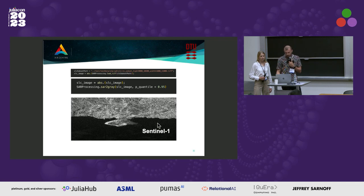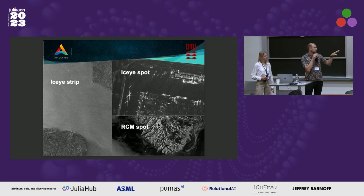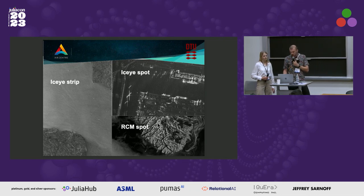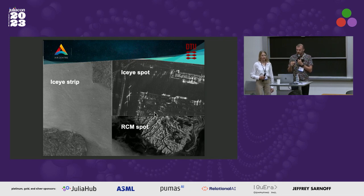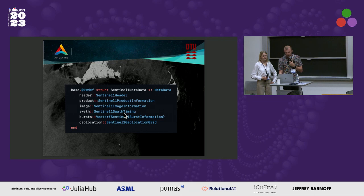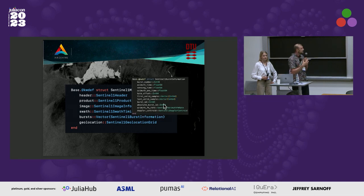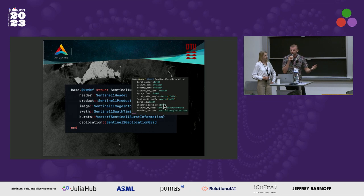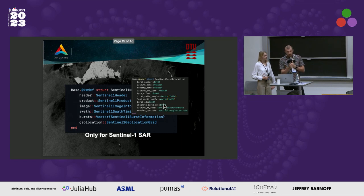We can also see and work with other types of SAR data. Here are some from two different satellites — the ISAI and the Radarsat constellation mission — with different resolutions. But these are all amplitude images. In order to work with the phase content, you actually need to do quite a bit of work, which we have done for the Sentinel-1 data. You can see the metadata here — it is a structure of a bunch of other structures. As an example, the time is not in datetime format because it's not accurate enough; it is in Float64 because we do speed-of-light calculations. This has been implemented only for the Sentinel-1 SAR satellite.